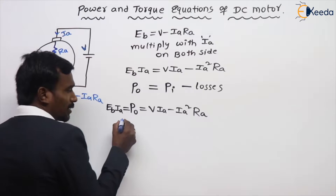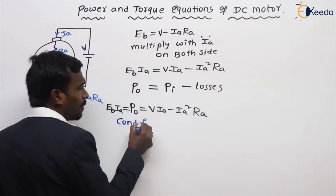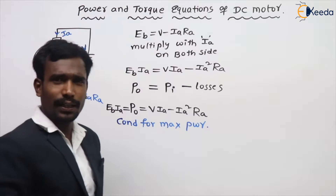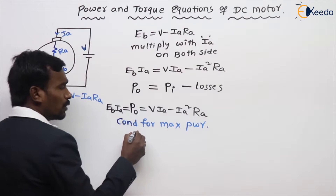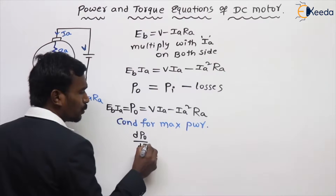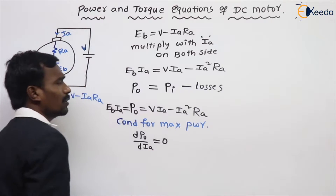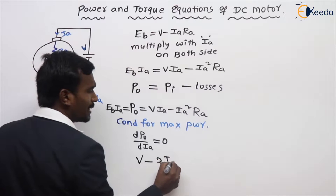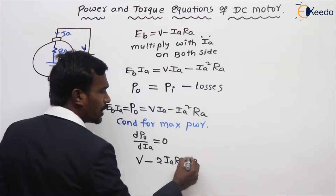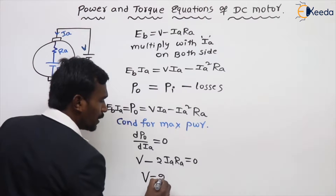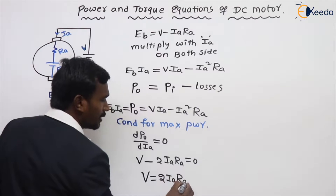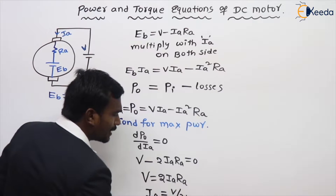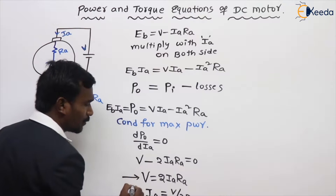Now, condition for maximum power. To find the condition for maximum power, differentiate the power with respect to IA and set it equal to zero. So the differentiation gives V minus 2 IA RA equals zero. Then the condition for maximum power is V equals 2 IA RA, or IA equals V by 2RA.